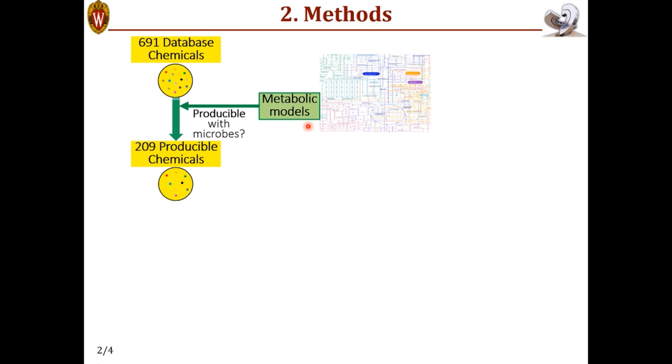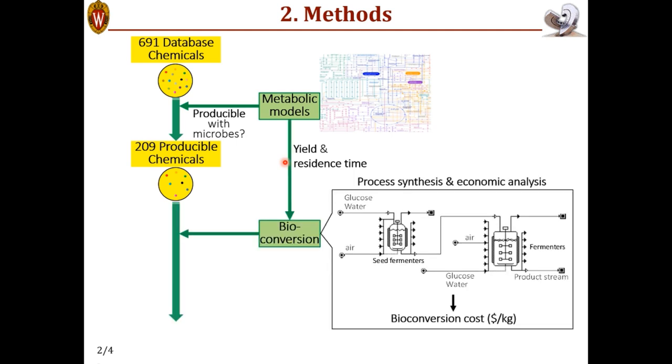Another use of the metabolic models is to estimate two very important parameters. One is yield, which is how much product we can get per unit of sugar we feed to the microbes. And the other parameter is residence time, which represents how fast the reactions happen. These two parameters are then used to estimate the bioconversion cost based on this industrial scale fermentation process we developed.